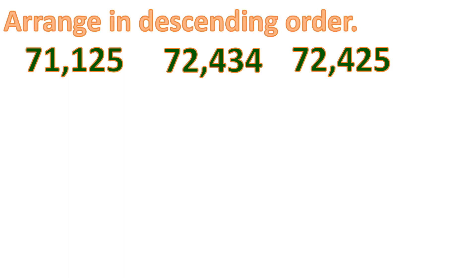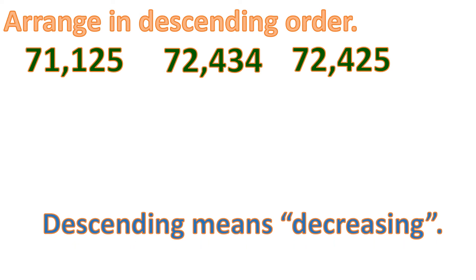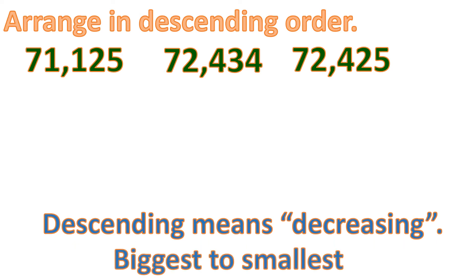Now how about this example? We have 71,125 and 72,434. We want to arrange them in descending order. So what does it mean by descending? Descending means decreasing, or it means arranging from biggest to smallest.